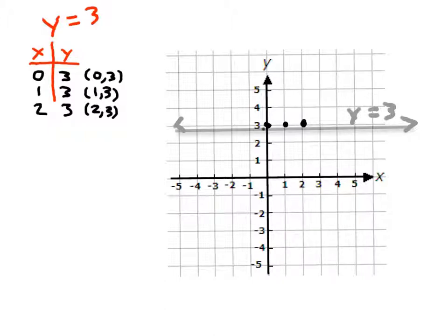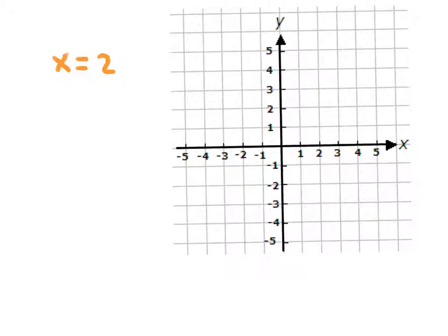Notice again, that is a horizontal line. So y equals any number — say, negative 2 — would give us the line y equals negative 2, also a horizontal line. Now let's see how we would graph a vertical line. Let's go ahead and graph the equation x equals 2.